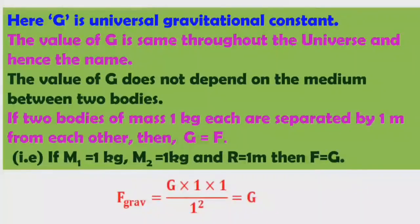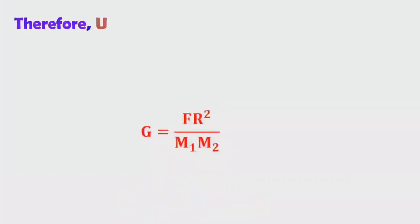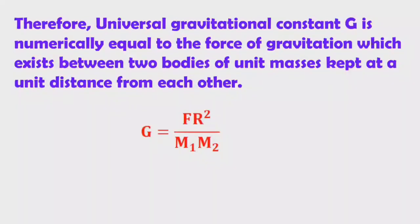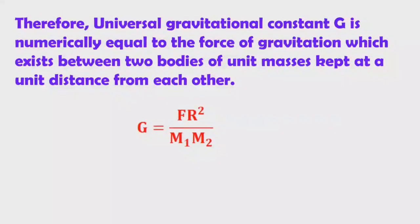By substituting m1 = 1 kg, m2 = 1 kg, and R = 1, we get F = G. So, G is numerically equal to the force of gravitation which exists between two bodies of unit masses kept at unit distance apart. The formula for the universal gravitational constant is G = F·R² / (m1·m2).